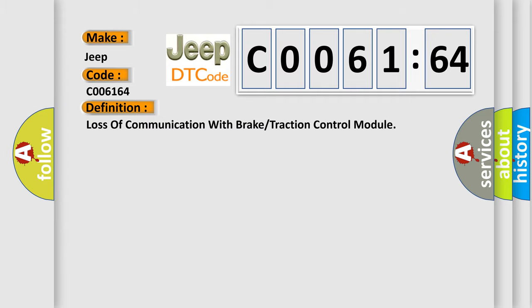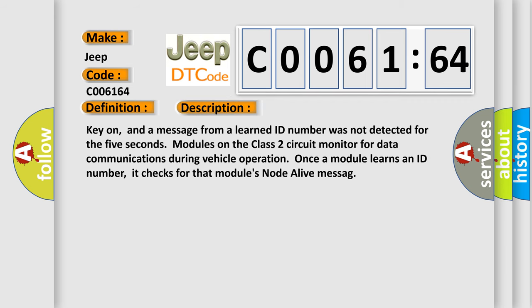And now this is a short description of this DTC code. Key on, and a message from a learned ID number was not detected for 5 seconds. Modules on the class 2 circuit monitor for data communications during vehicle operation. Once a module learns an ID number, it checks for that module's note alive message.